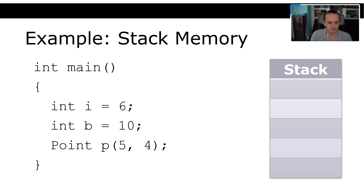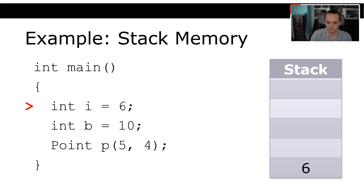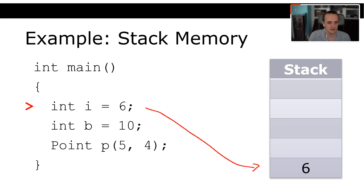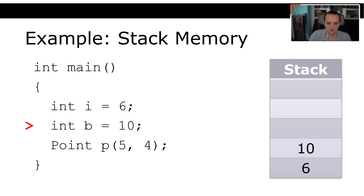We're going to go line by line through an example — not exactly how it works, but a good abstraction. We've got our `int main`, and somewhere on the stack is the current address of stack memory set up by the OS. We have no variables on the stack before the program runs. Then we say `int i = 6` — that variable `i` gets allocated on the stack, holding the value 6. Next, `int b = 10` — on top of the 6 on the stack goes 10.